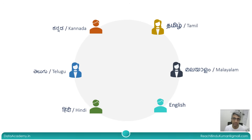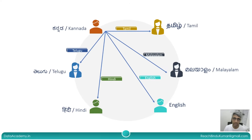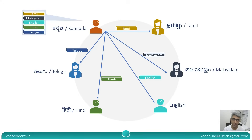Now let's imagine the Kannada-speaking person has a need to communicate to every other individual. In order to speak to the other person, he has to learn the other person's language — in this case, Tamil. The same applies every time this person needs to communicate to the other individuals; he has to add all these different languages as a skill. But expecting one person to add multiple languages as a skill sounds quite unfair.